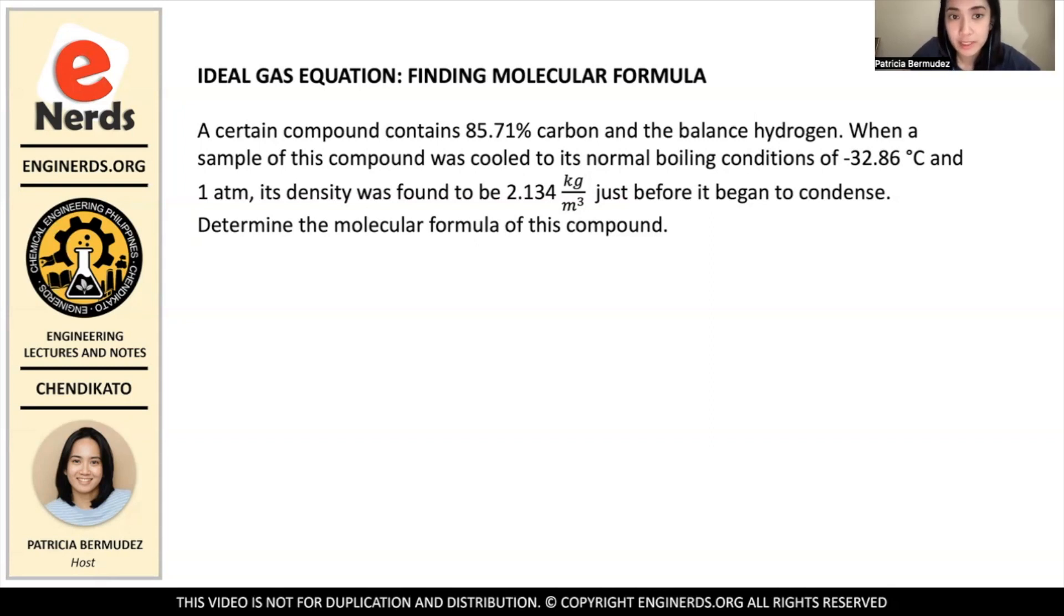So from the first sentence, we know that it contains 85% carbon and the remaining, when we say the balance, we say the remaining is already hydrogen. And the only two elements that are present in this compound are carbon and hydrogen.